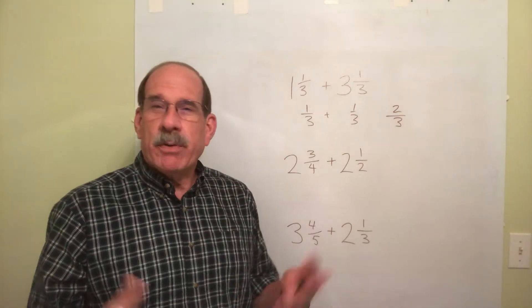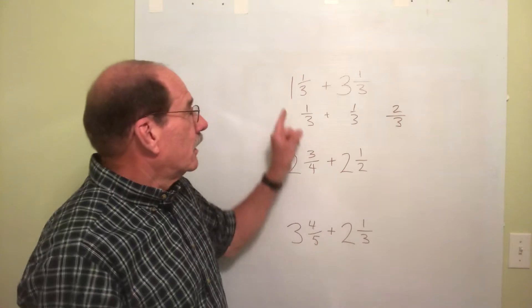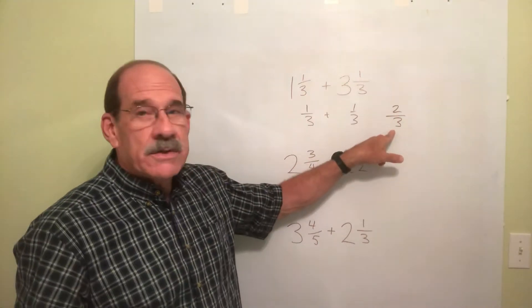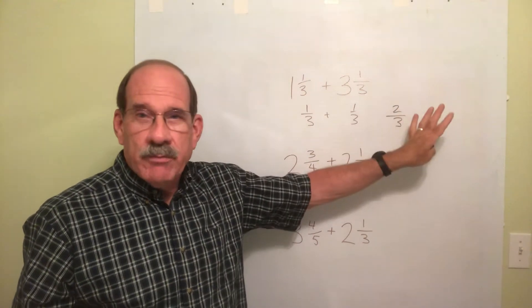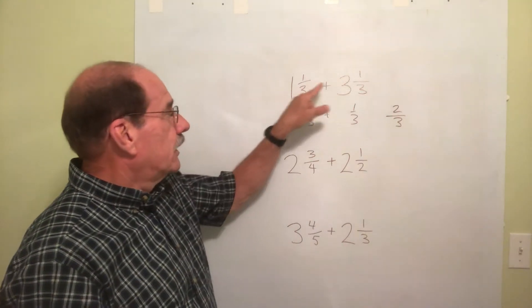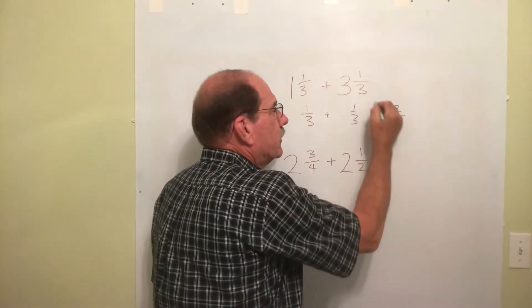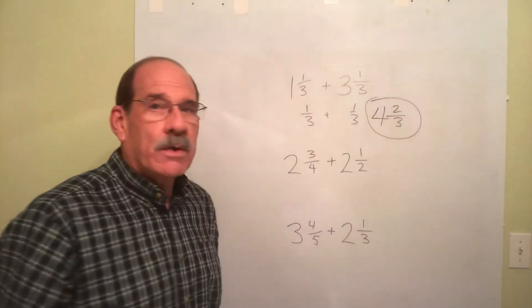So now of course we're not done with the problem, but we're done with the fraction portion of that problem. So now 1 third plus 1 third is 2 thirds. Once we're finished with the fraction part, now let's go back and pick up the whole number portion. Now we can take the 1 plus 3, which is 4, and the final answer is 4 and 2 thirds.